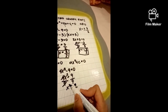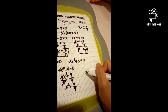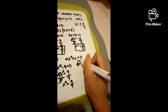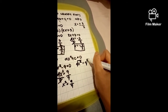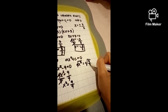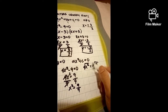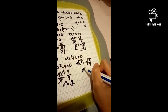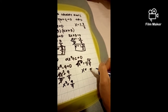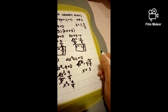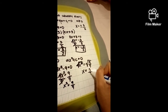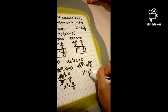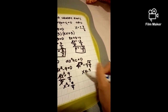Now, to eliminate the square, we take the square root of both sides: the square root of x squared equals the square root of 9 over 4. The square root of 9 is 3 and the square root of 4 is 2, so x equals plus or minus 3 over 2.